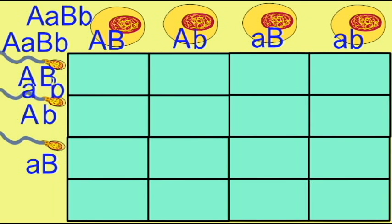And so therefore, these double heterozygotes or dihybrids produce these four types of gametes.